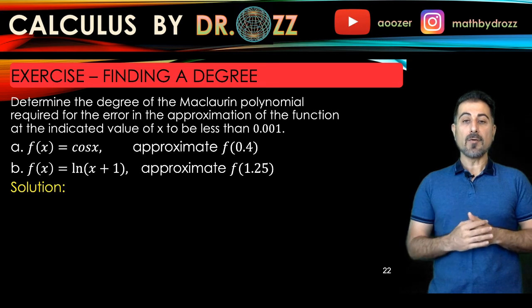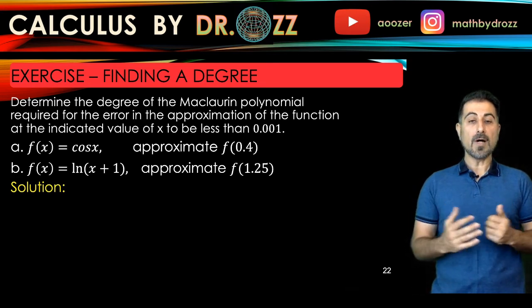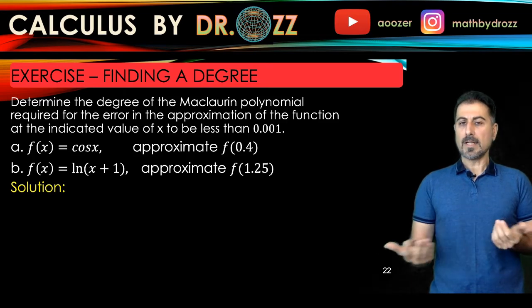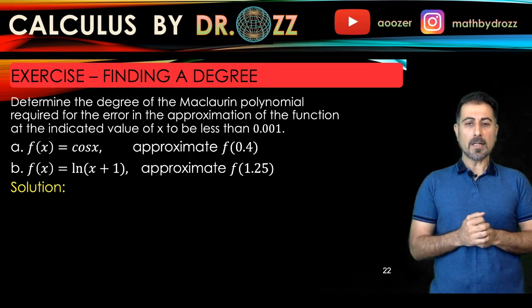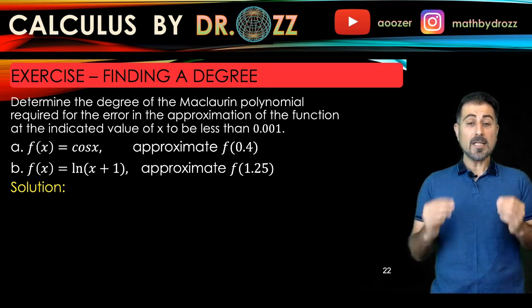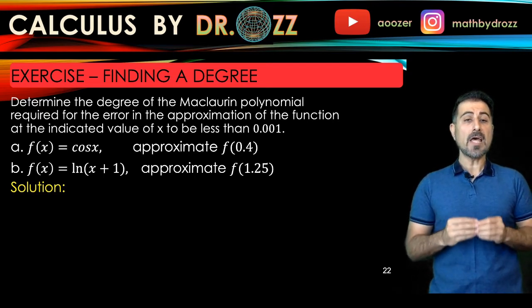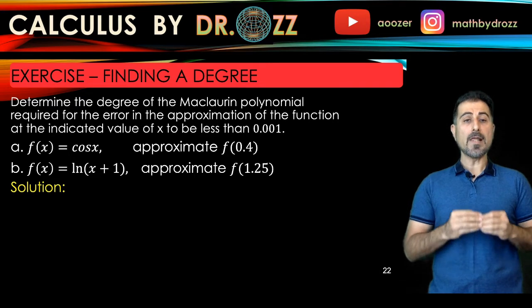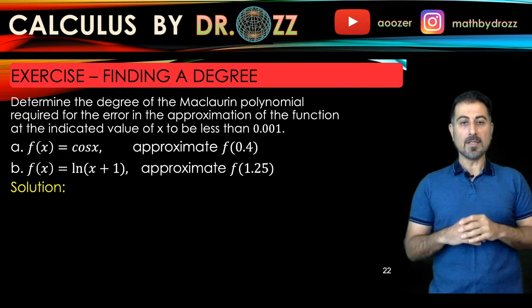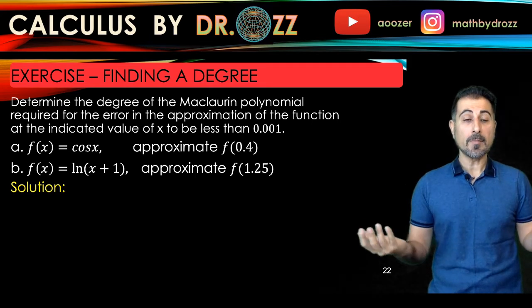And in the second case we're trying to approximate f of 1.25 for f equals ln(x + 1). So essentially we're trying to approximate ln of 2.25 without using a calculator. And in each case we do not want to have an error more than 10 to the minus 3. So the cap for the error, the maximum for that is 10 to the minus 3.